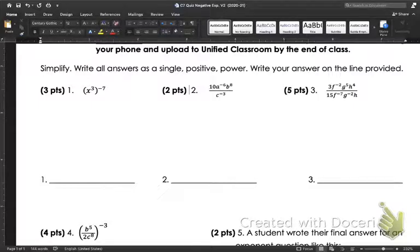For number 1, we are given a power to a power rule. When that happens, we need to multiply our exponents.